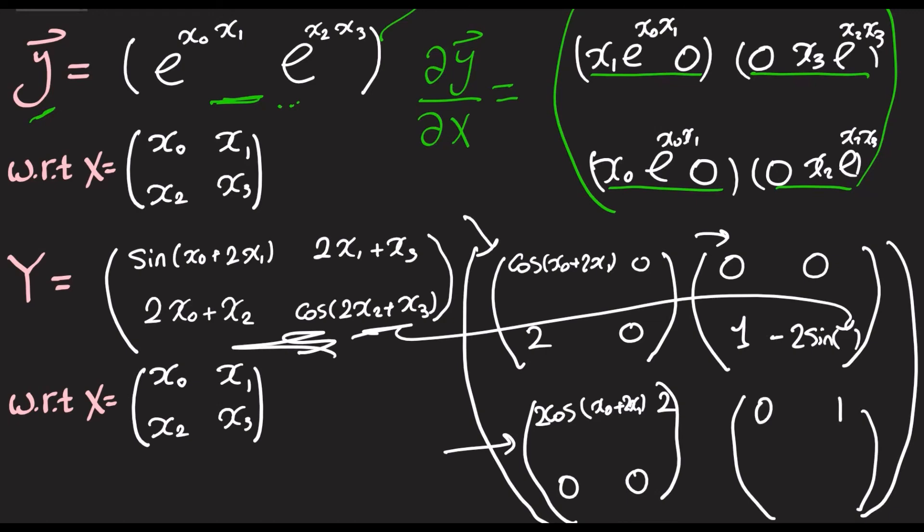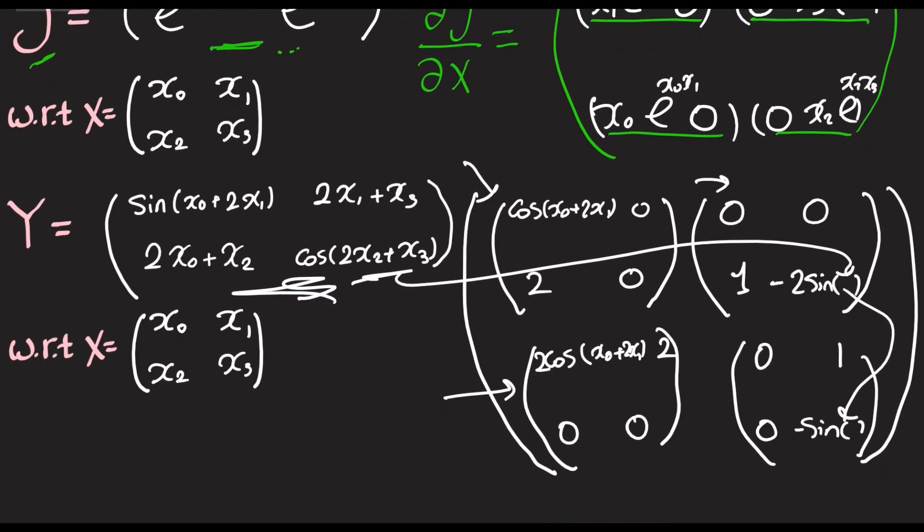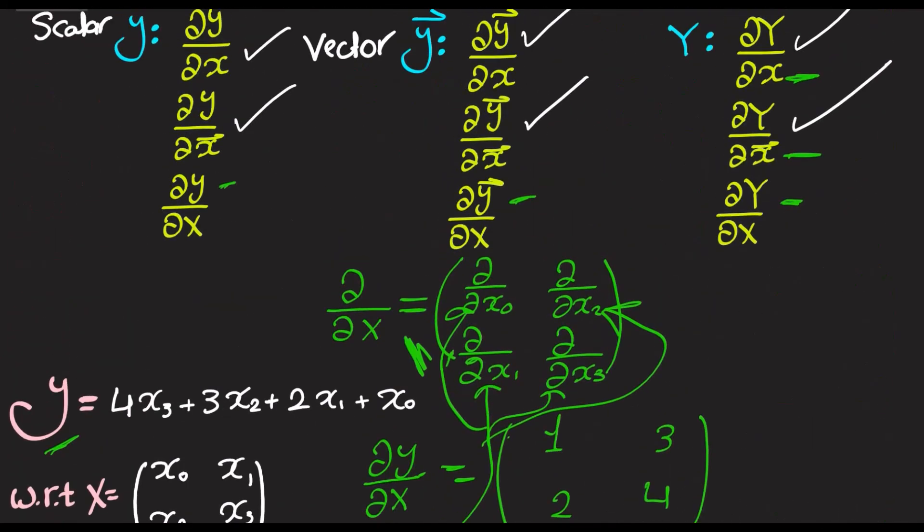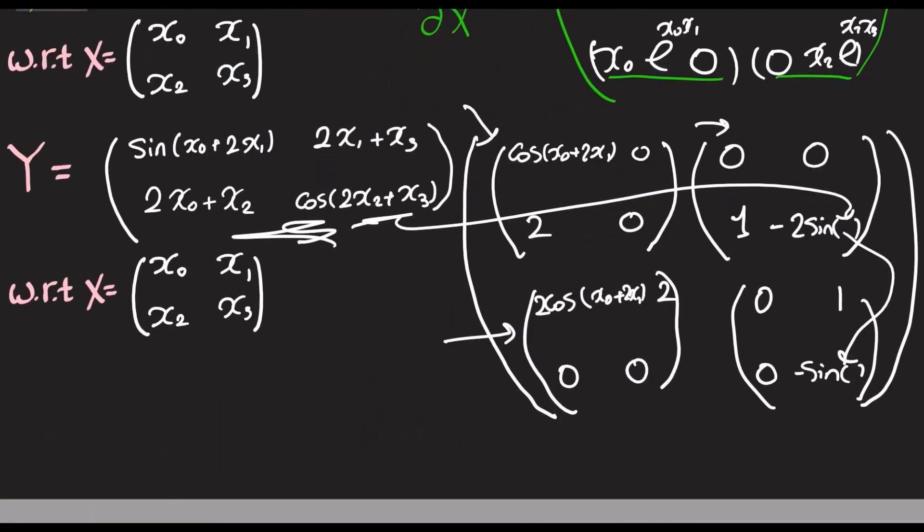So, 0, 1, 0, negative sine. What is seen here? So, yeah. This is also a tensor. And since it's a matrix of matrices, this is basically how you do this whole matrix differentiation thingy.